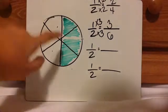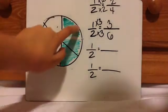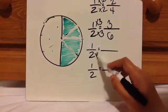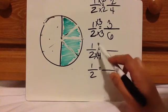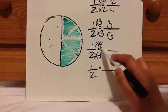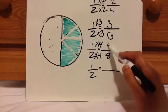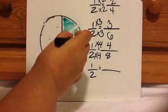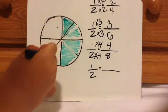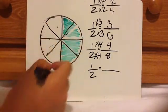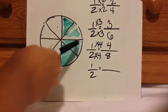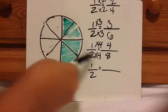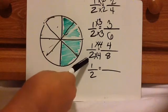Let's say I decided to cut it into four pieces instead — times four. So two times four is eight, one times four is four. In this situation it would be cut into eight pieces, with four out of eight shaded in. And that is equal to one-half.